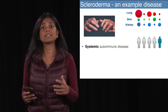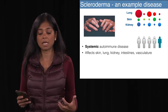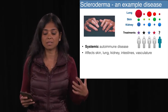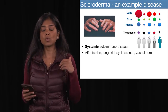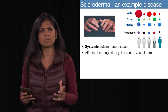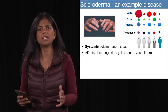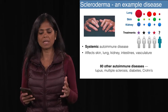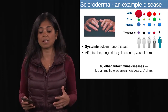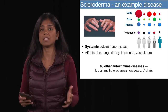Let me give you an example: scleroderma. It's a systemic autoimmune disease — systemic meaning it affects many organ systems including skin, lung, kidney, intestines, and vasculature — and the way it affects individuals varies a great deal. Some experience the disease entirely in the skin, others in the lung, others in the kidney. So the classic protocol for treating scleroderma is not a simple question; clinicians naturally think about variability and ask what is the right treatment protocol for this particular person.